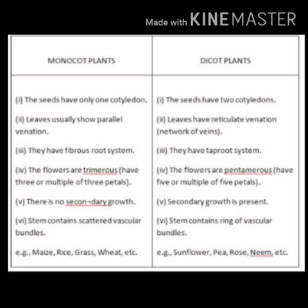Monocot aur dicot mein kuch mazid bhi differences hai. Like leaves kaise hote hai inke? Leaves ke andar jo veins hote hai — wo parallel venation show kerti hai monocot plants ke andar. Jabke leaves ke andar reticulate, branches like venation — jise reticulate venation kehte hai, network of veins hote hai — wo reticulate venation present hote hai dicot plants ke andar.